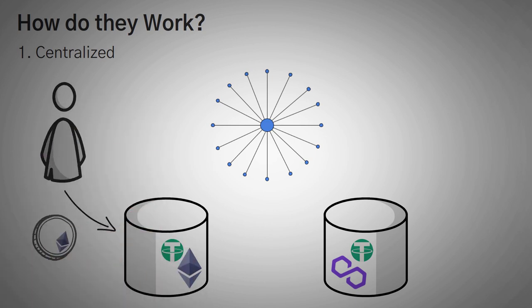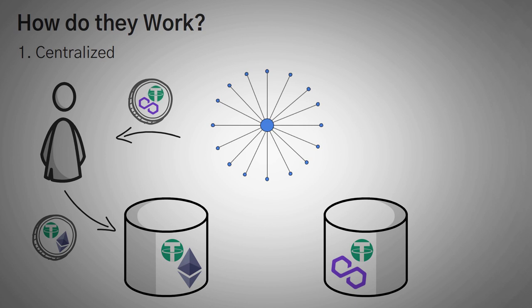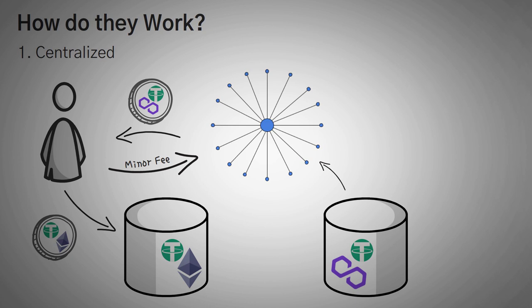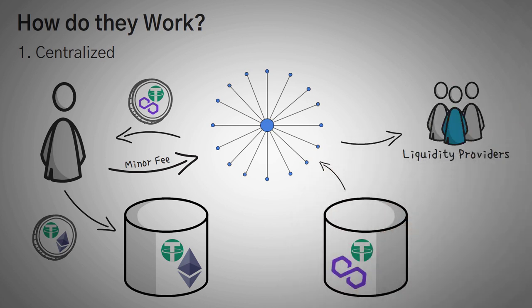When you go to deposit your ethereum tether, it gets added to the ethereum tether pool, and then the centralized authority will send you an equivalent amount of polygon tether, which actually gets taken out of that pool. Now, of course, there is a fee that you pay that gets taken out and given to the centralized authority or the liquidity providers, but it's usually a very small fee, and you're pretty happy paying it, because there's not really any other way to get on the network.